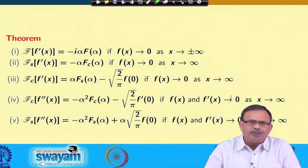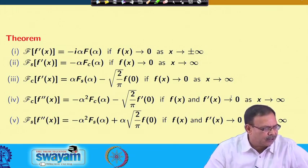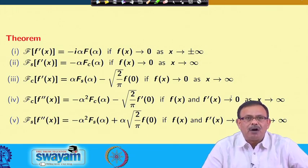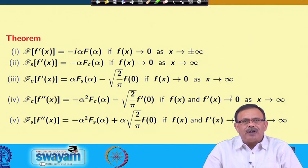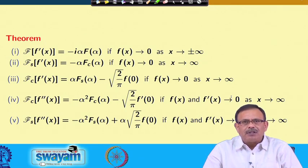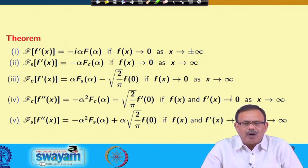For Fourier cosine transform of f'(x), this equals α · Fs(α) - √(2/π) · f(0), when f(x) → 0 as x → ∞. We have also shown results for the double derivative: Fourier cosine transform of f''(x) and Fourier sine transform of f''(x) = -α²·Fs(α) + α·√(2/π)·f(0). Note that for the second derivative, not only f(x) but also f'(x) must both approach 0 as x → ∞.